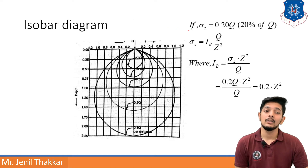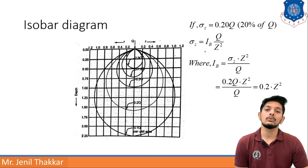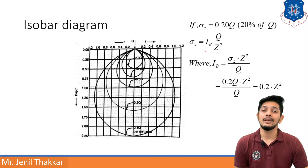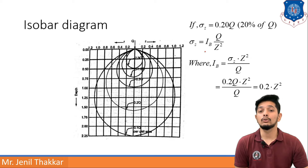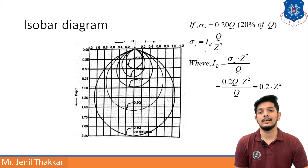Let us take an example. If σz = 0.20q, that is 20% of q, and we want to plot the 20% isobar diagram, we use σz = Ib × q / z². Making Ib the subject: Ib = σz × z² / q. Putting σz = 0.2q, we get Ib = 0.2 × z², so it varies with the square of depth z. That is all for the isobar diagram.